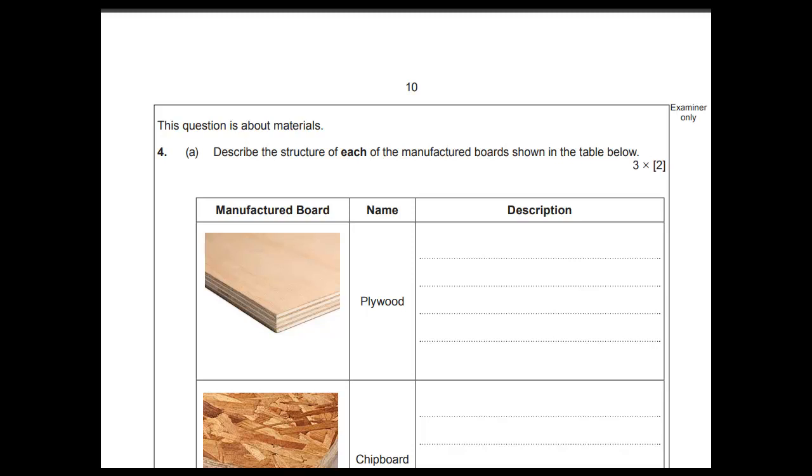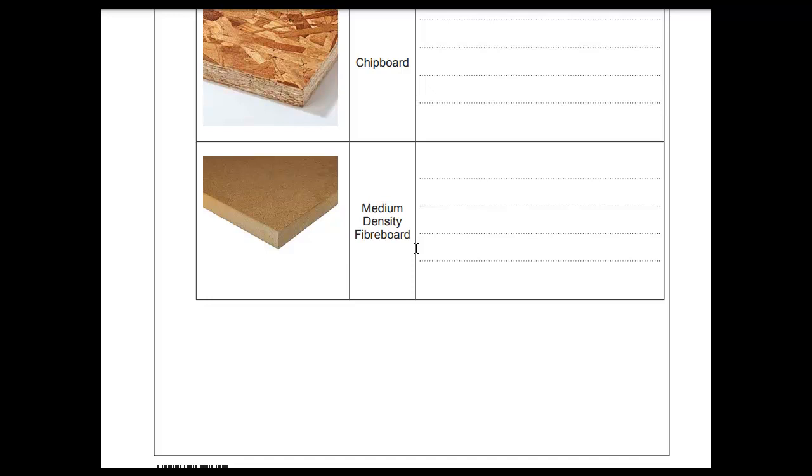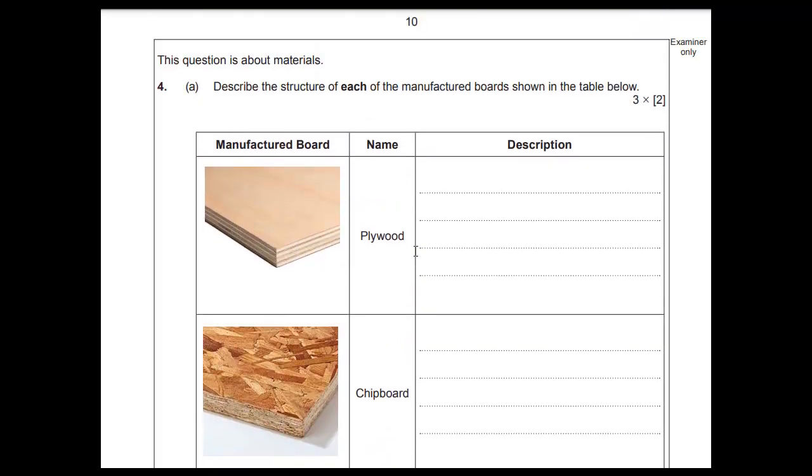We're looking at this question here which is a six mark question. It's got three times two, so whenever you're answering questions on exam papers, this is an indication of what they're actually asking. Before I've even read the question, if it's a six mark question, I'm looking for six specific points to put down. This question is about materials and woods. You should have a sheet that has plywood, chipboard, and MDF or medium density fiberboard on it.